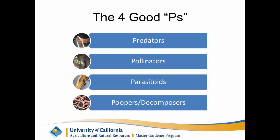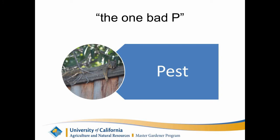When you think about the beneficials, you want to be able to classify them into four groups — the four good P's: predators, pollinators, parasitoids, and poopers, also called decomposers. We will ask you to name examples of pests you can find in the garden and explain why they are a pest. That is the one bad P: pests.